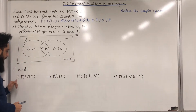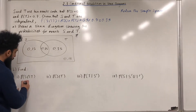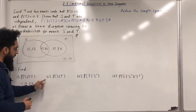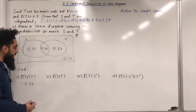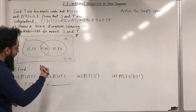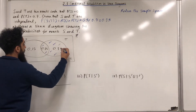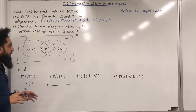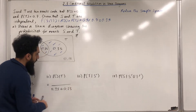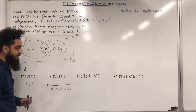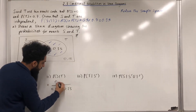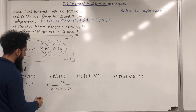Moving on to part B. Part 1: probability S intersect T — we've already calculated this, it is 0.35. Part 2: probability S given that event T takes place. We reduce the sample space to event T and shade it in. The probability will be out of 0.35 plus 0.35. The part of T representing event S is 0.35, so 0.35 over 0.70, which gives 0.5.